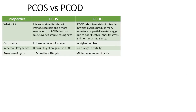Regarding the presence of cysts, in PCOS more than 10 cysts are generally found in the ovary, whereas in PCOD only a minimum number of cysts are present — not many cysts are found.